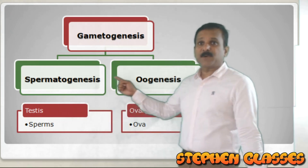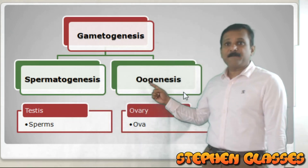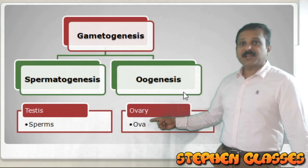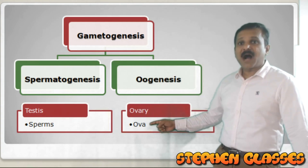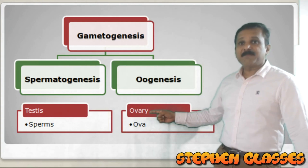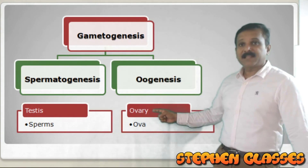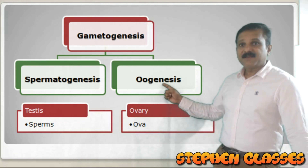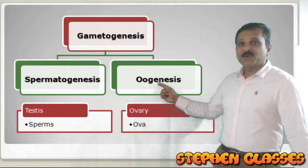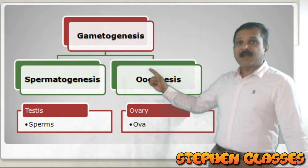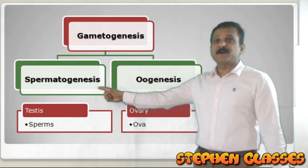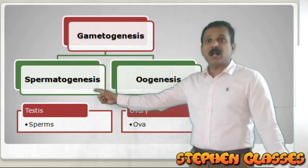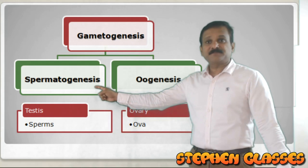The process of sperm cell production is called spermatogenesis. What about in females? In the female, the production of ova is done by the ovary, and that process is called oogenesis. So oogenesis is the formation of ova, and the formation of sperm cells is called spermatogenesis.